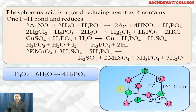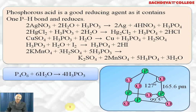Let's look at the structure of P₄O₆. P₄O₆ is a dimer of P₂O₃. It has 4 phosphorus atoms, and between each phosphorus atom there is a P-O-P bond, giving a total of 6 P-O-P bonds. The P-O-P bond angle is 127 degrees, and the O-P-O bond angle is 99.5 degrees. The bond lengths are equal at 165.6 picometers. This is the structure of P₄O₆.